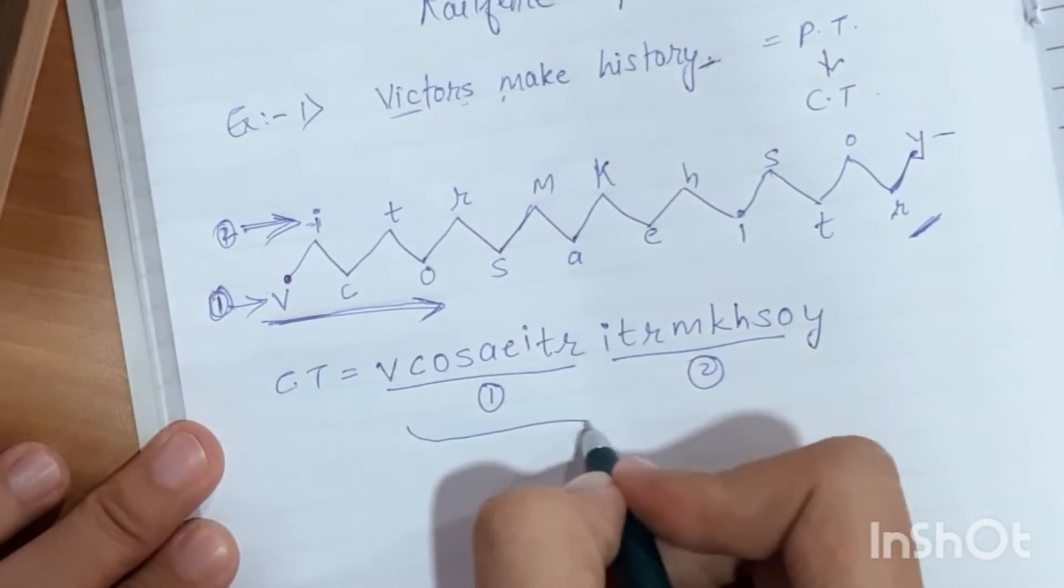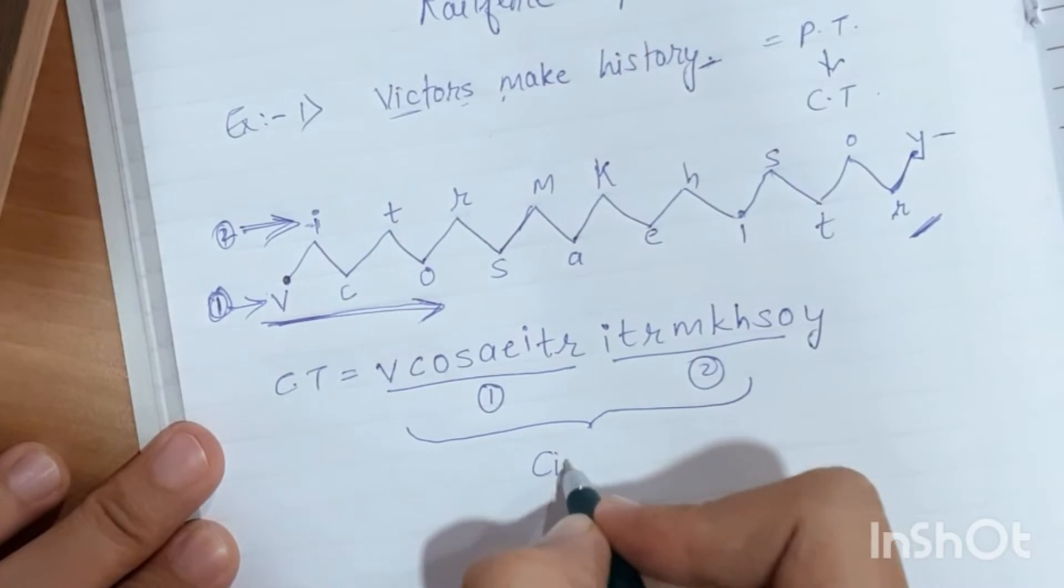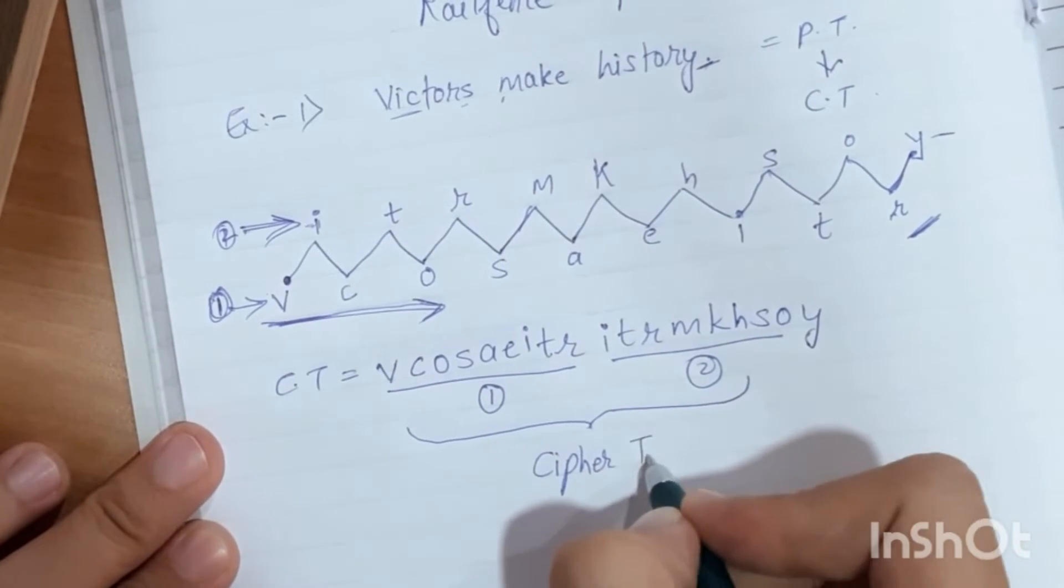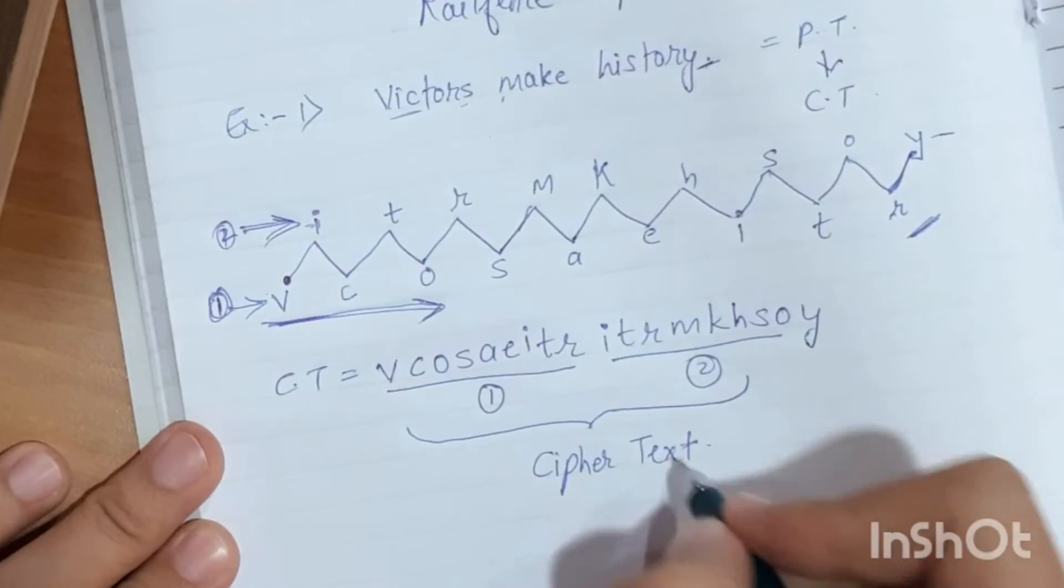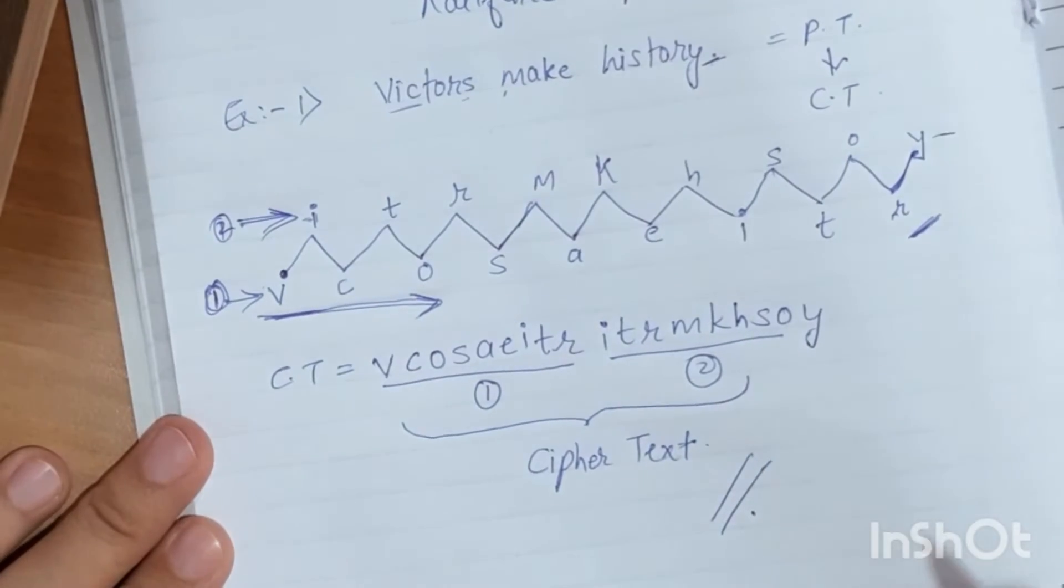You will complete your cipher text, which is in encrypted form, using rail fence cipher.